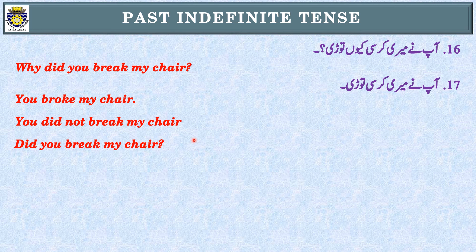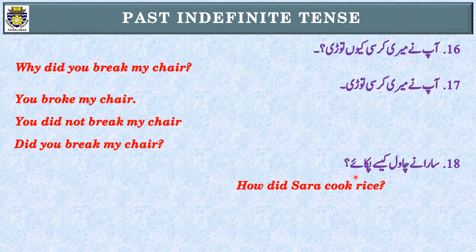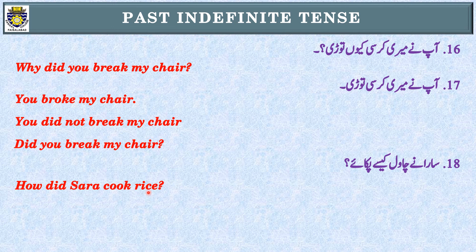Sentence number eighteen: 'How did Sara cook rice?' Identification of tense: past indefinite tense. This follows the same four steps as sentence sixteen. Simple: 'Sara cooked rice.' Negative: 'Sara did not cook rice.' Interrogative: 'Did Sara cook rice?' Then place 'how' before 'did': 'How did Sara cook rice?'